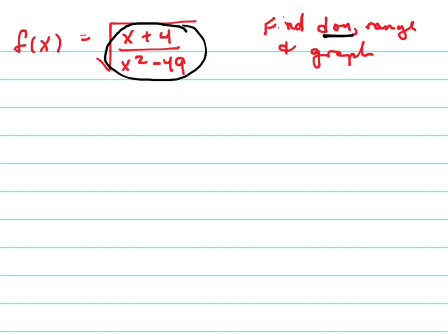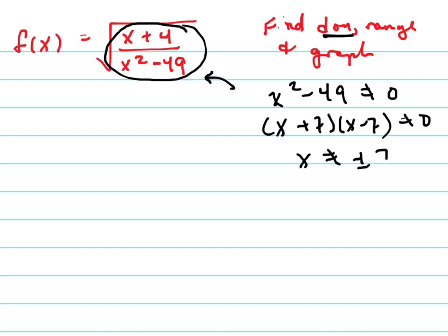That thing has to stay positive, and also the denominator can't be 0. So let's start with that. x squared minus 49 cannot equal 0. That's x plus 7 times x minus 7, that's how that factors. Can't equal 0, which means x cannot equal positive 7 or negative 7. So that's the first part of the domain restriction.